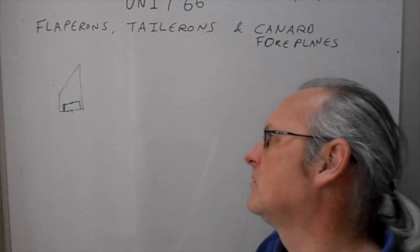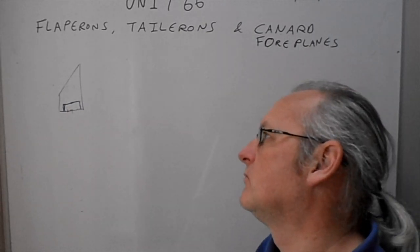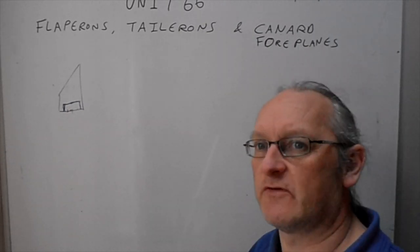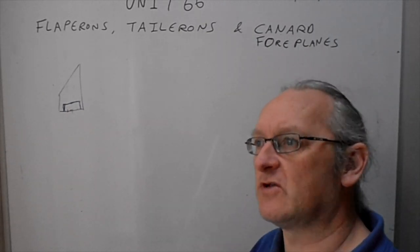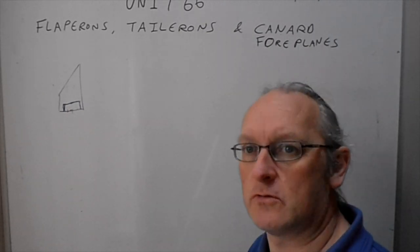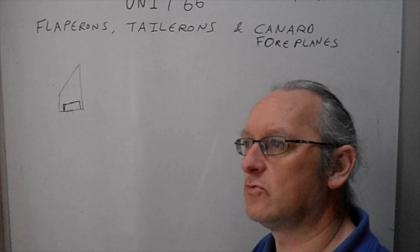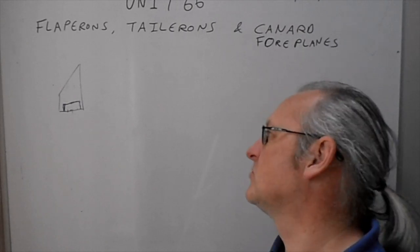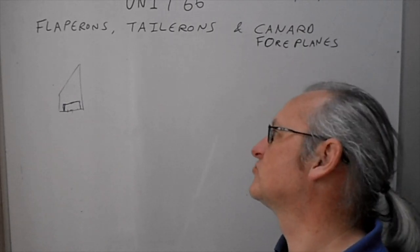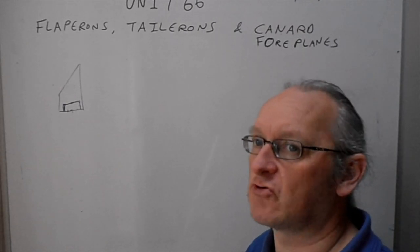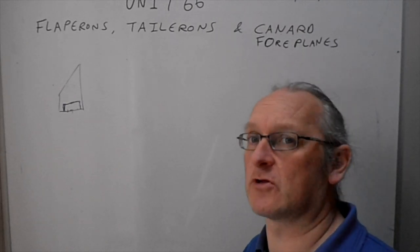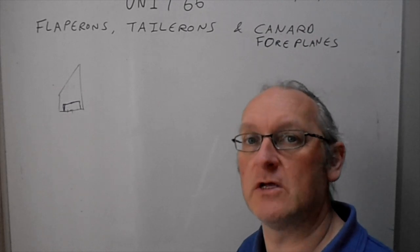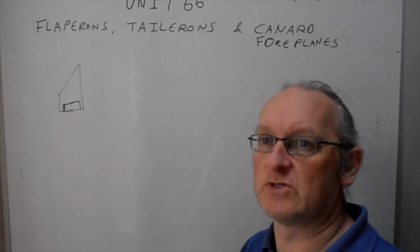So the advantages of flaperons on airliners and fighter planes: you're getting two for one — two control inputs for one control surface. It saves weight on the aircraft, and if you've got hydraulic controls anyway and you can make them do two things, you're saving weight.